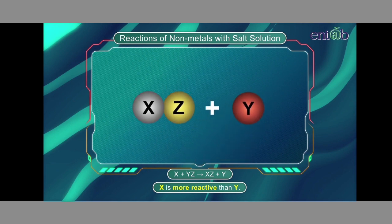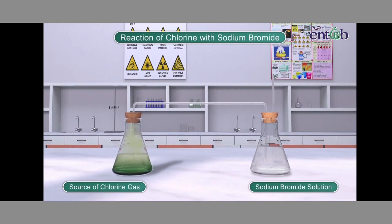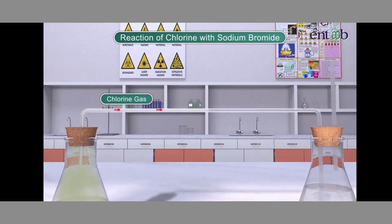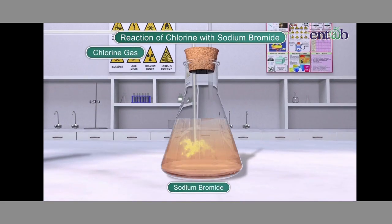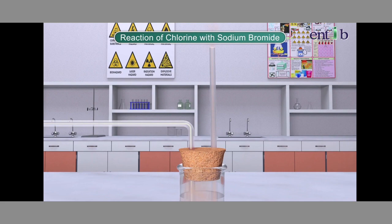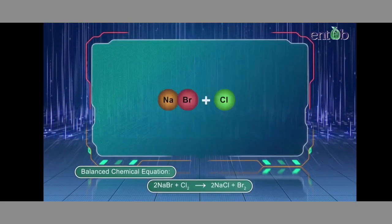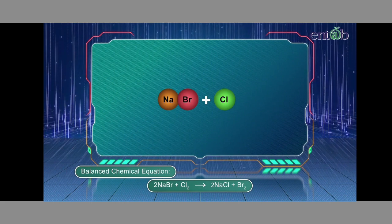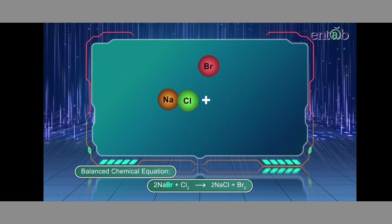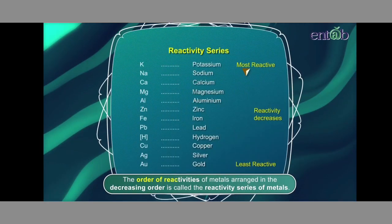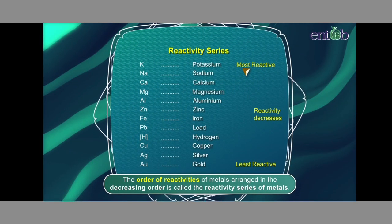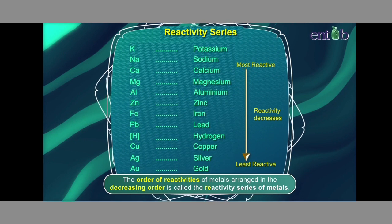Now let us see how nonmetals behave with salt solutions. The more reactive nonmetal replaces the lesser reactive nonmetal from its salt solution. When we pass chlorine gas through a solution of sodium bromide, this results in the formation of sodium chloride and bromine is evolved. The more reactive chlorine displaces the lesser reactive bromine from the solution of sodium bromide.